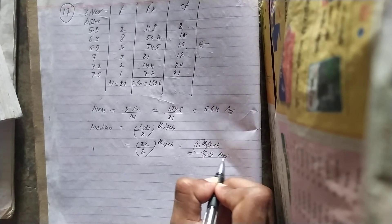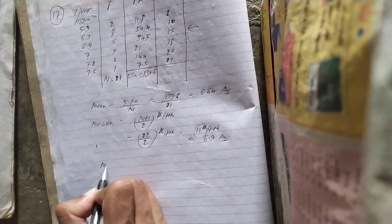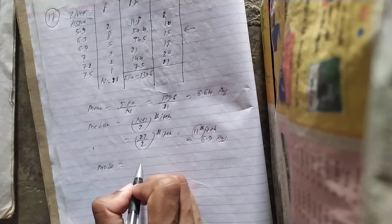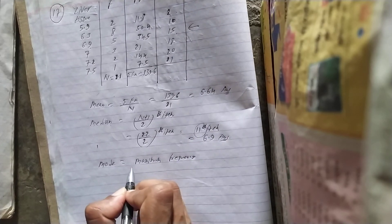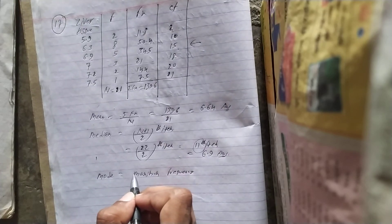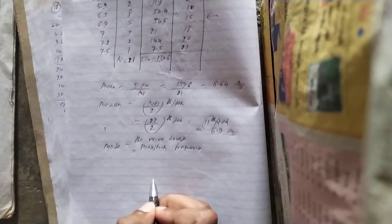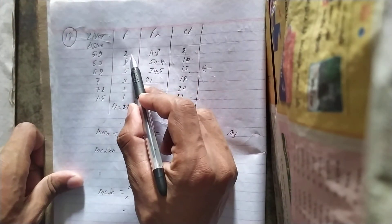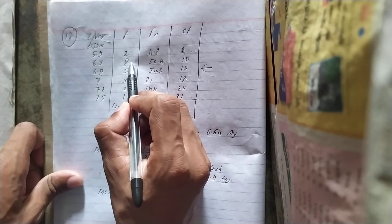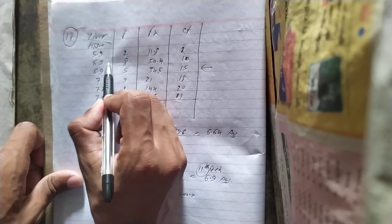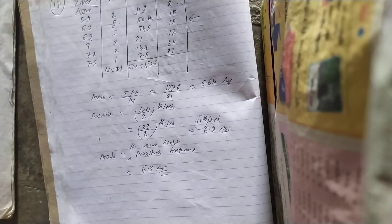Now for the mode — the formula for mode: the value which has maximum frequency. The value having maximum frequency — that is the mode. So the value with the biggest frequency is 6.3. So the answer is 6.3. I hope you like this video.